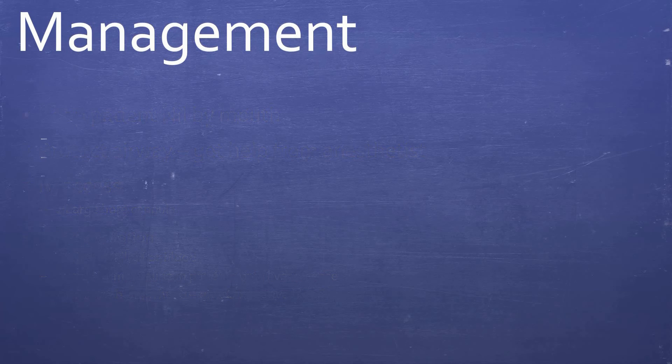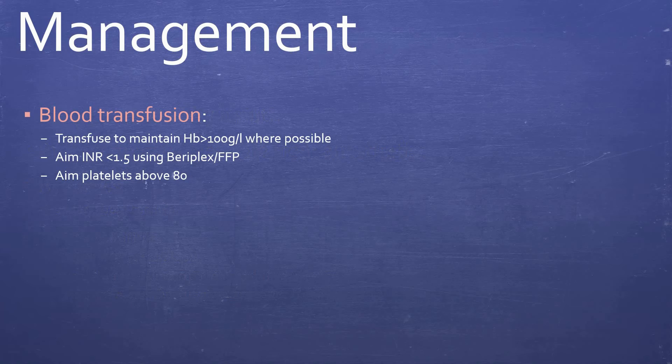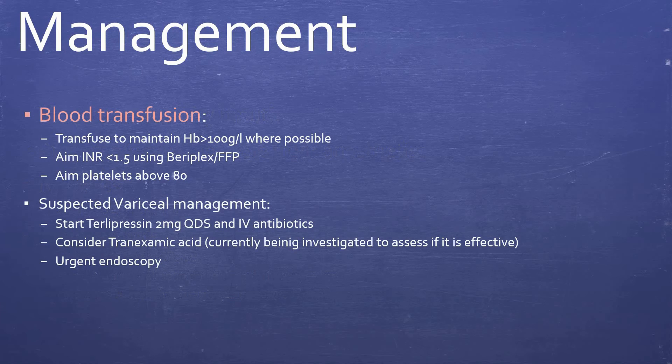Generally transfuse to maintain Hb above 100g per liter where possible, although restrictive transfusion policies have been shown to have better outcomes. Aim INR less than 1.5 using Beriplex or fresh frozen plasma. Aim platelets above 80.